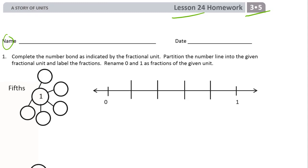Complete the number bond as indicated by the fractional unit. Partition the number line into the given fractional unit and label the fractions. Rename 0 and 1 as fractions of the given unit. Okay so this is a lot of the stuff that we've been doing.